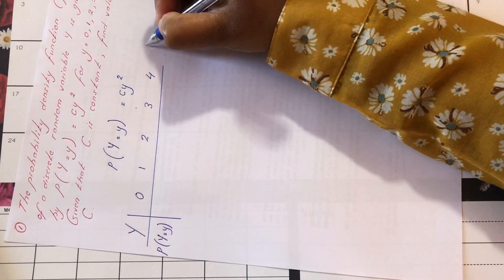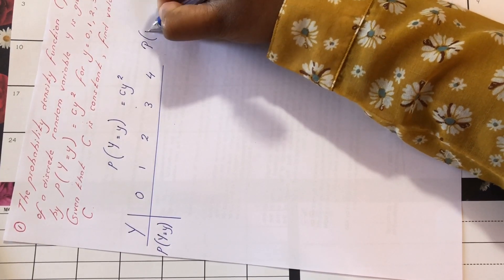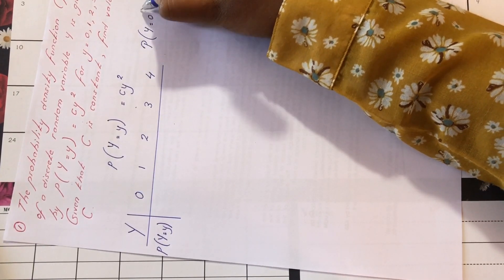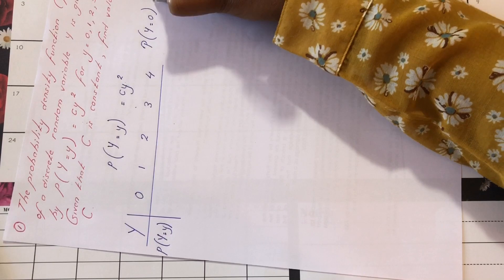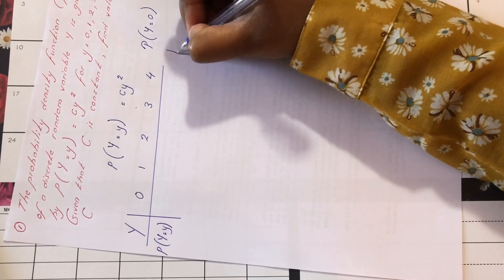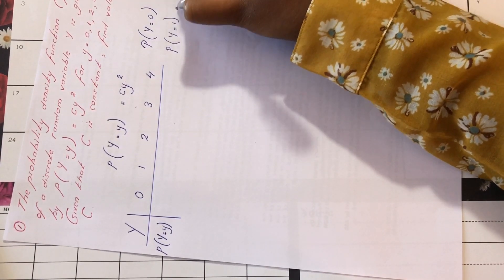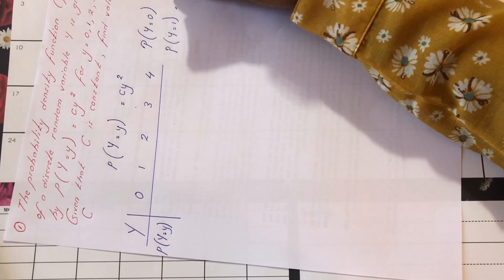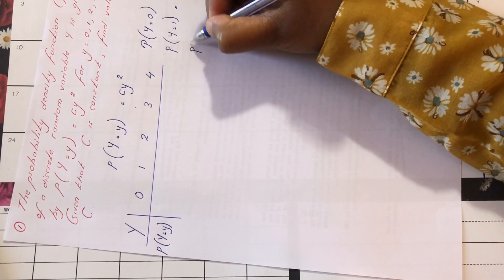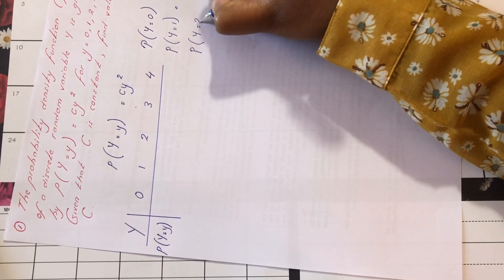So we are going to find probability of y equals 0. So c times 0 square is going to be 0. Probability of y equals 1. We are going to have c times 1 to the square, which is c.